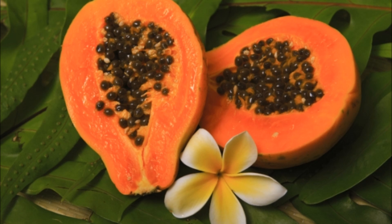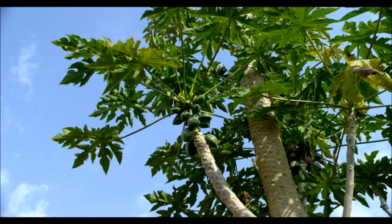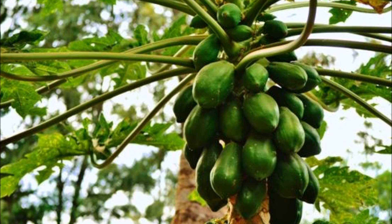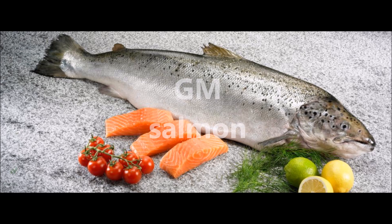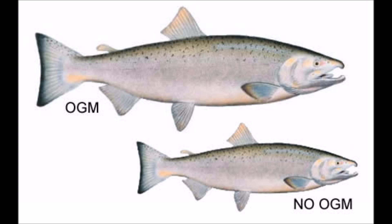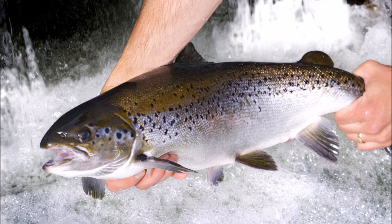The first virus-resistant papayas were commercially grown in Hawaii in 1999. Transgenic papayas now cover about 1,000 hectares of the total Hawaiian papaya crops. GM salmon: genetic engineering has created a GM salmon that grows more quickly than usual and consumes less food, reducing farming costs and increasing production to meet growing global demand for fish.